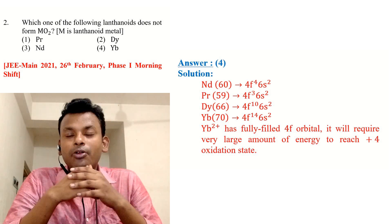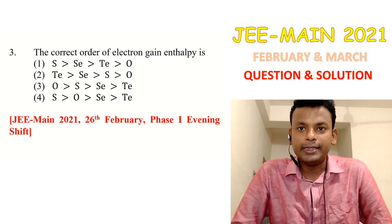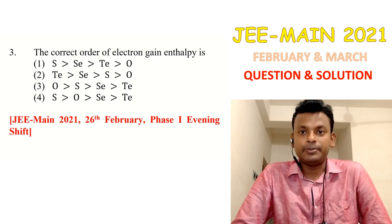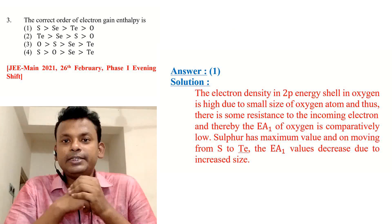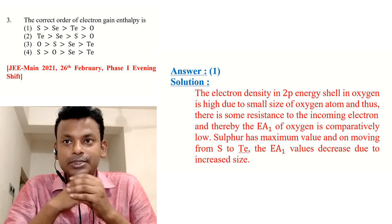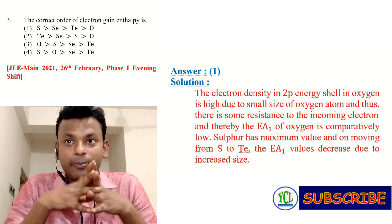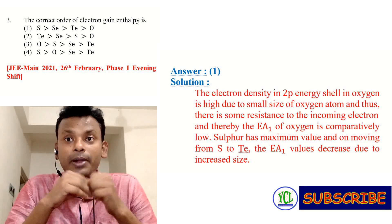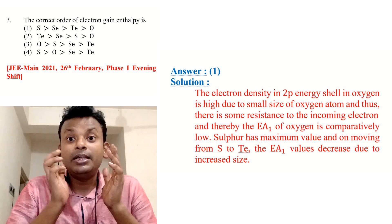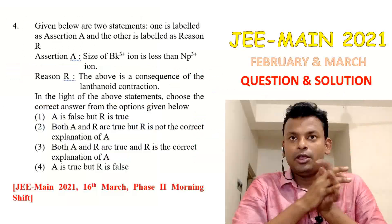Question 3: The correct order of electron gain enthalpy is — options are given. This question was set in JEE Main 2021, 26th February, phase one. Answer is option 1. Electron density in the 2p orbital of oxygen is high due to small atomic size, causing resistance to an incoming electron, so electron gain enthalpy of oxygen is comparatively low. Sulfur has the maximum value, and from sulfur to Te the value decreases due to increasing size.